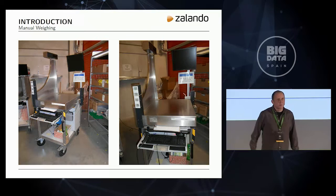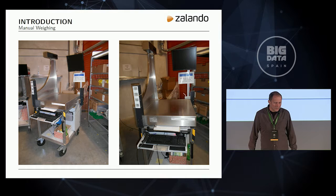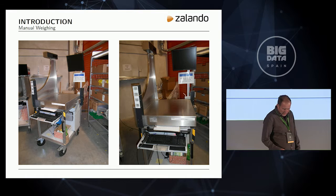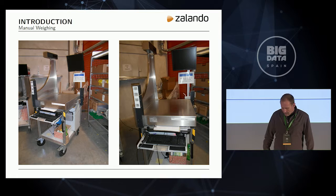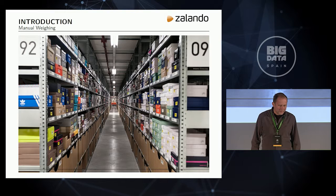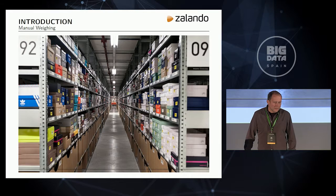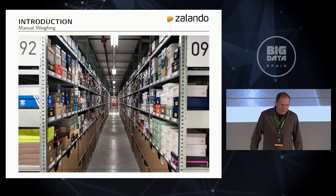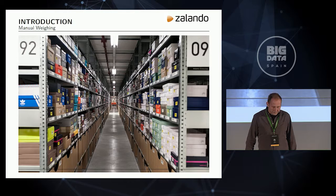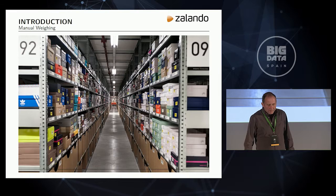That gave rise to people from the operations team setting up a manual weighing process. They acquired a number of scales on wheels, which also have a volume scanner and electric scale included. But it turned out that this process is rather tedious. We have hundreds of picking aisles in the warehouses, with a chaotic storage strategy, and it is quite tedious to move a scale trolley through the warehouse to find the articles you want to weigh next.